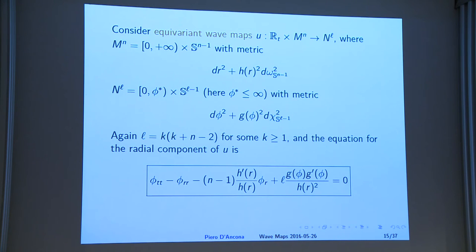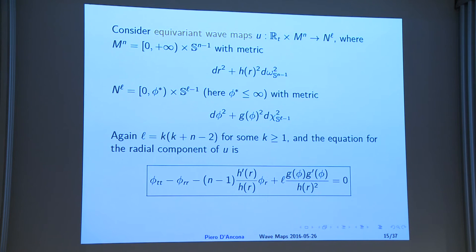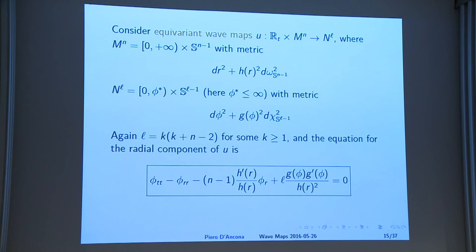We would like to see precisely what kind of equation we have to deal with. Now we have two manifolds which both have rotational symmetry. I call the radial component of the base metric H, and the target metric is G as before. The equation becomes this one: the r is replaced by the function H, and this is the radial box_H on the manifold M. The structure is very similar, but you have additional difficulty because of this operator with variable coefficients.